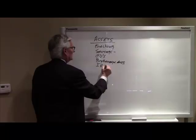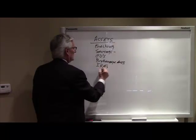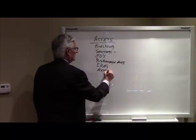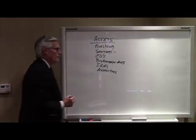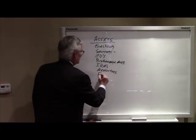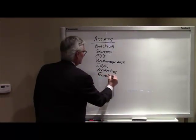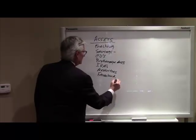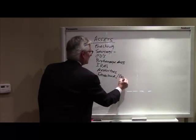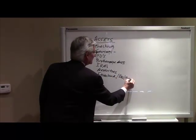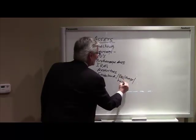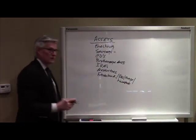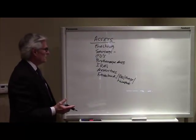Our assets also include our IRAs, annuities, farmland, and the equipment that goes with that, and the crops that go with that, and the livestock that goes with that — for those of you who may be farm and ranch clients.